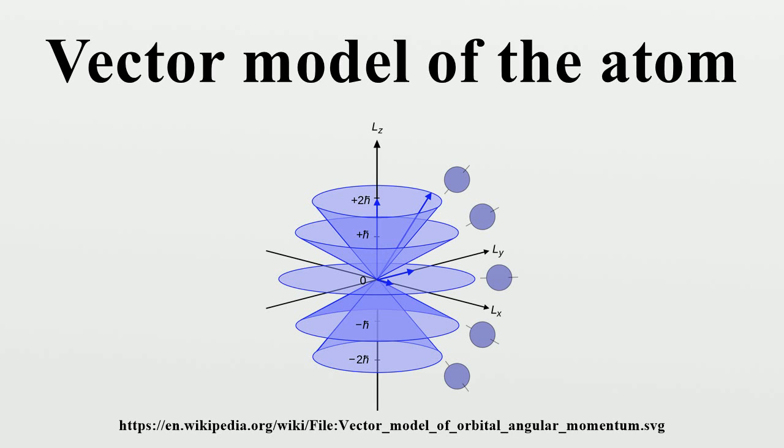Addition of angular momenta: For one electron atoms, there is only one set of cones for the orbiting electron. For multi-electron atoms, there are many states. Due to the increasing number of electrons, the angular momenta of all electrons in the atom add vectorially.